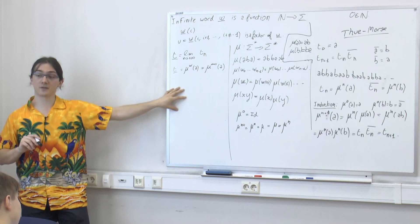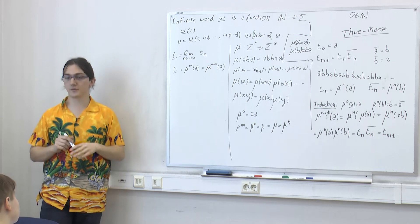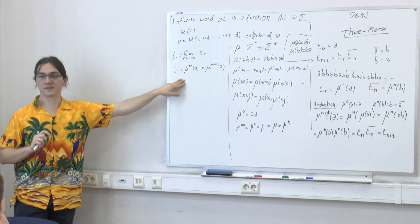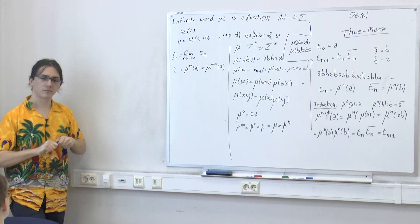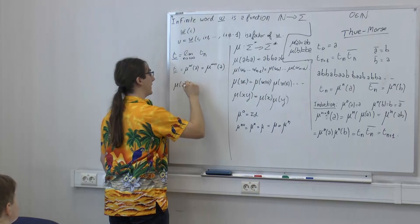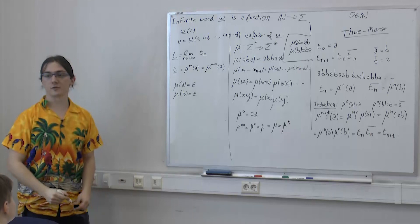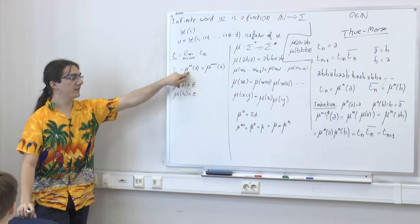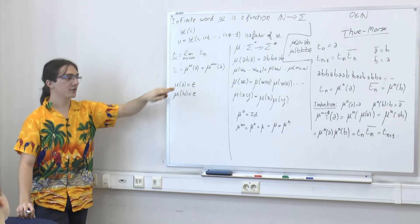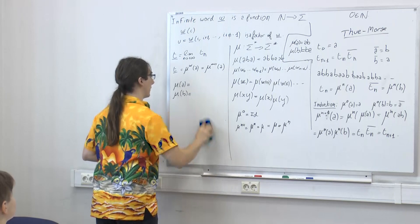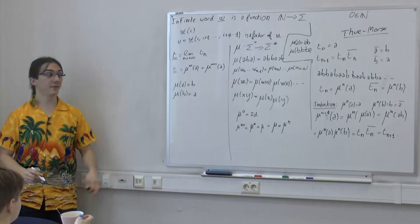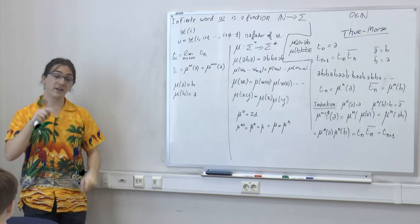A challenge problem: if you really have nothing to do, I would be interested in an efficient algorithm for the following. Given two morphisms mu and nu, find a non-empty word W such that mu(W) = nu(W). Of course you could answer the empty word, but that's cheating. The morphisms are finite objects — you can imagine an alphabet {0,1} with arrays for the images. An algorithm can take them as input; the size is the sum of the lengths of the images.